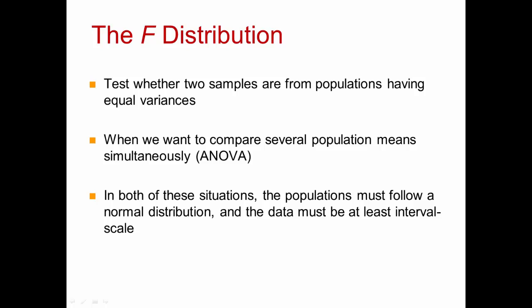The F-distribution was named to honor Sir Ronald Fisher, one of the founders of modern day statistics. It is used to test whether two samples are from populations having equal variances, and also when we want to compare several population means simultaneously. When we simultaneously compare population means from several populations, it's called analysis of variance. In both situations, the populations are supposed to follow a normal distribution, and the data must at least be interval scale.